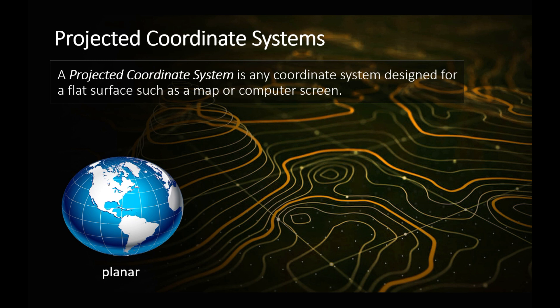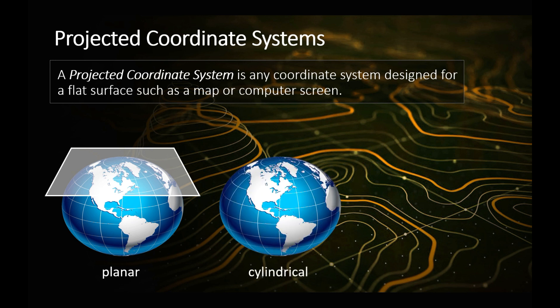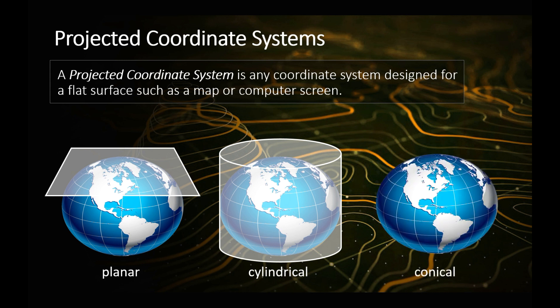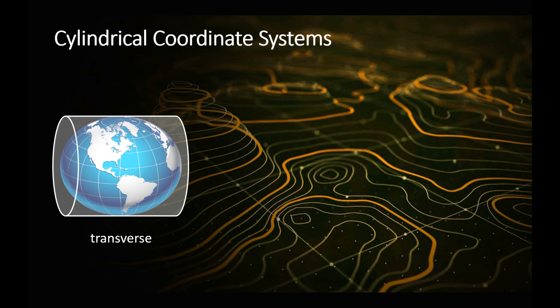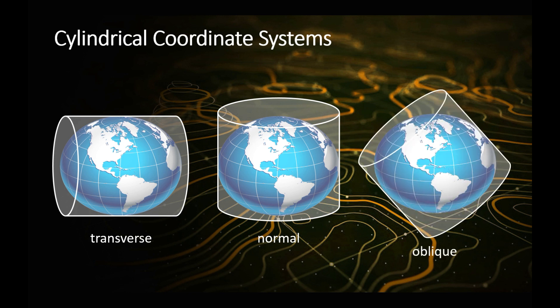There are different types of projections. There's the planar projection, where it's just a flat plane held up to the surface of the Earth. Then there's cylindrical, where the plane is actually wrapped around the Earth in a cylinder. And then you can also have conical, where the flat piece of paper is wrapped up in a cone and positioned on the Earth accordingly. The cylindrical coordinate systems can also be further divided into three systems: transverse, where the cylinder is popped on its side; normal, where it's just left as is; and oblique, if it's at a slight angle.